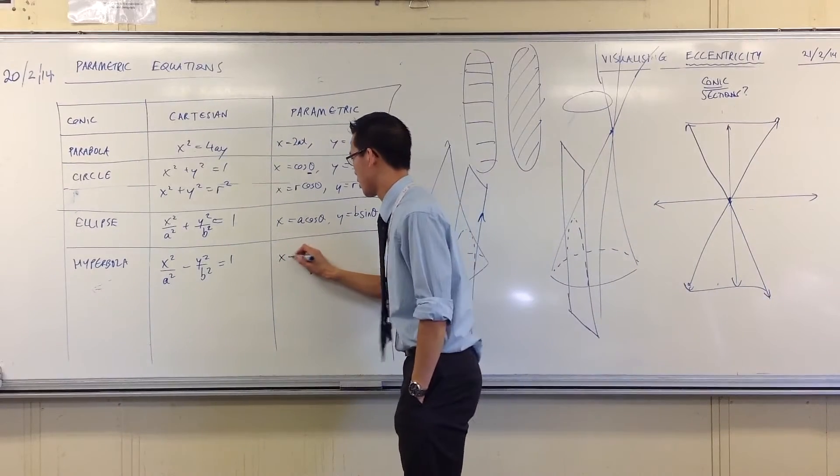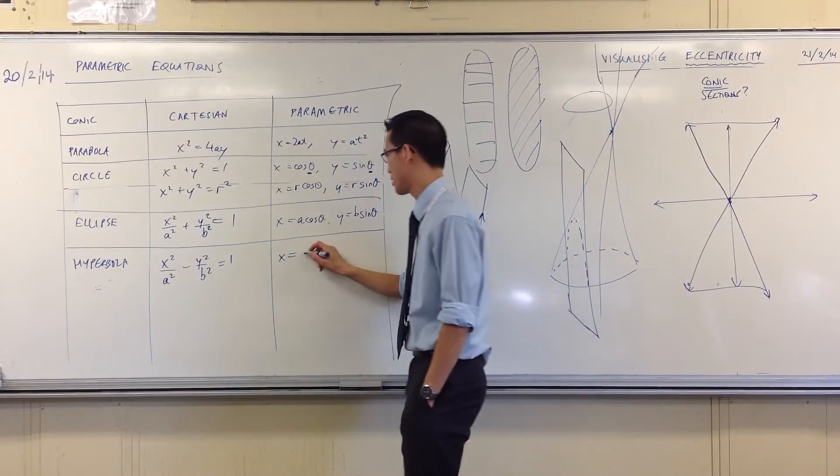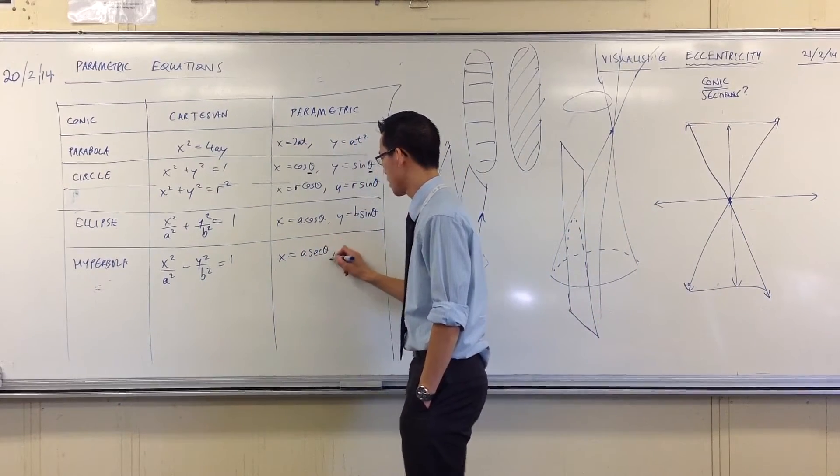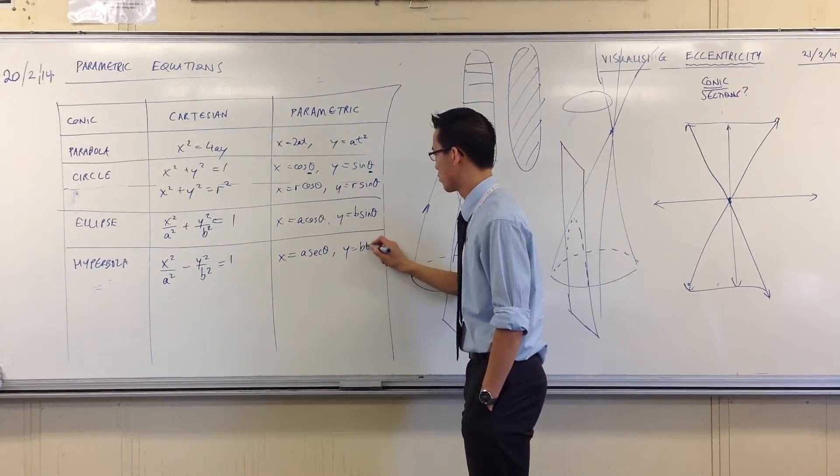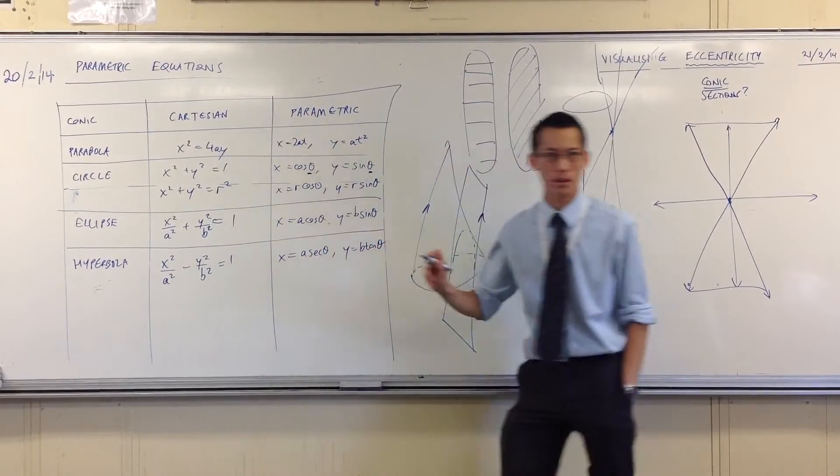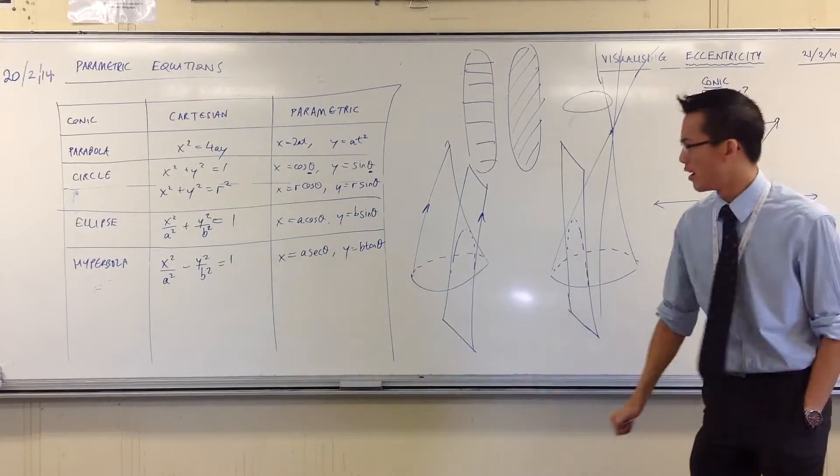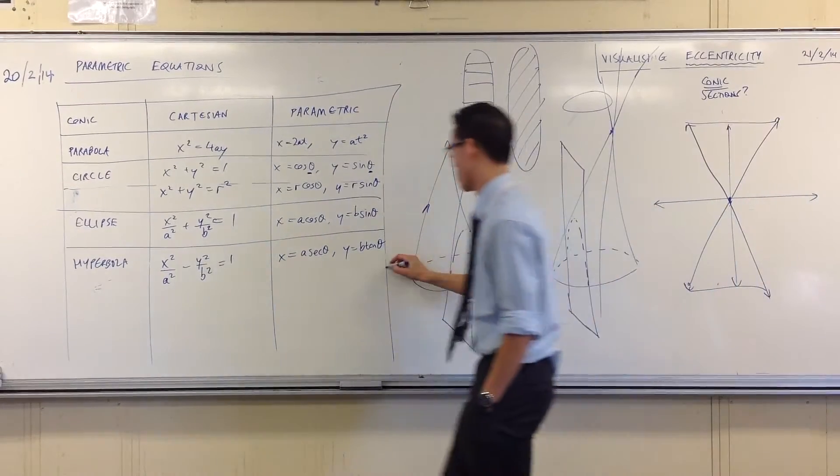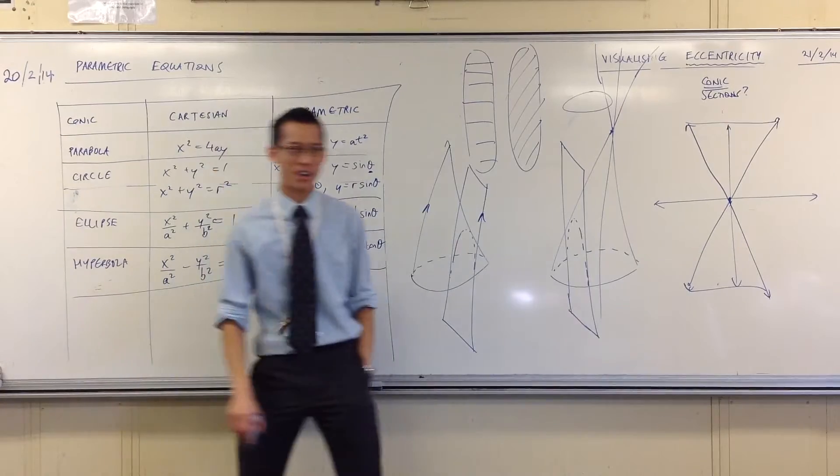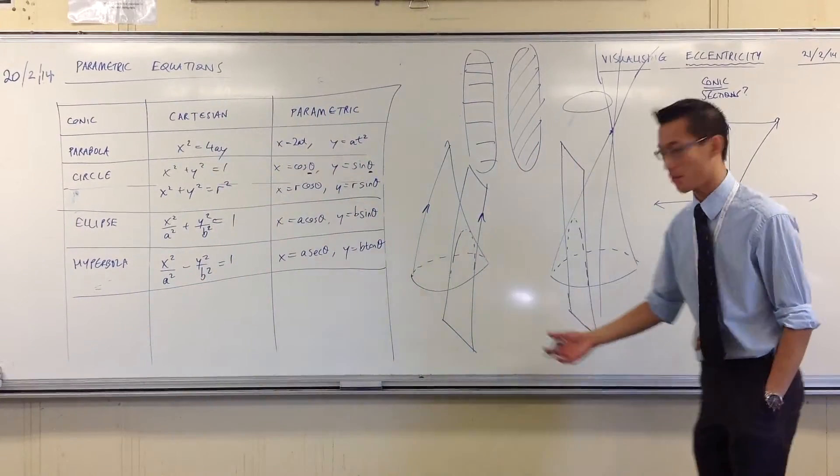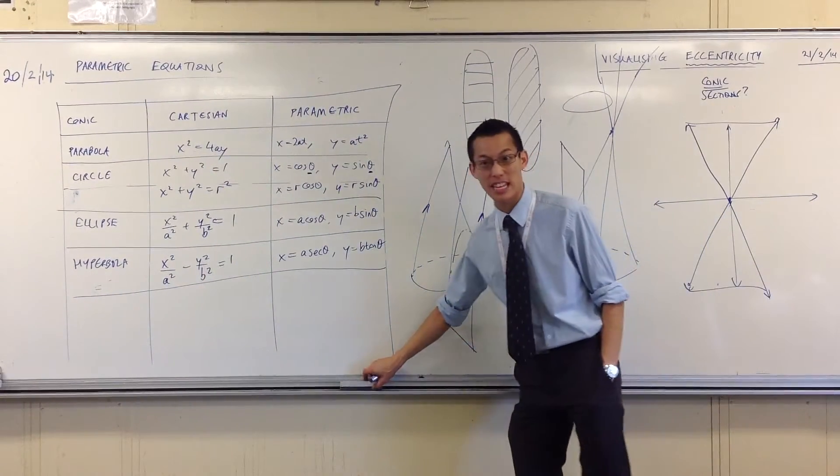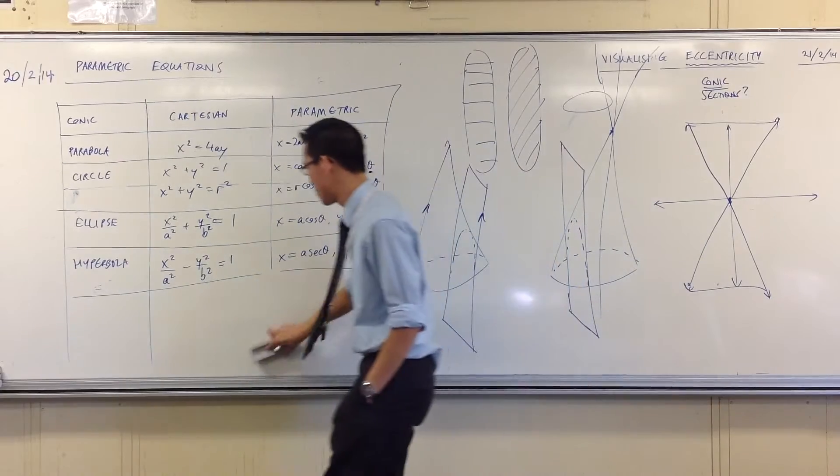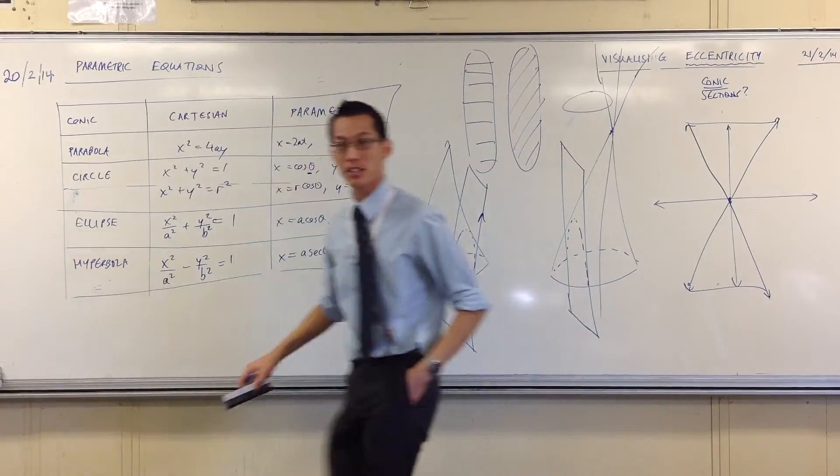So we're going to go like so. And I think from memory this should be x equals A sec theta and y equals B tan theta. Is that about right? Yeah, good. And you're like, hmm? Where does that come from? And the answer is some wacko geometry. But let's just quickly make ourselves content that this works. And it's a very, very simple trig identity that will let us do it.